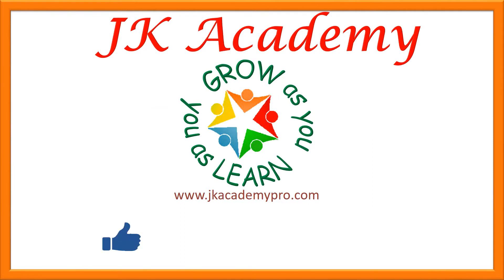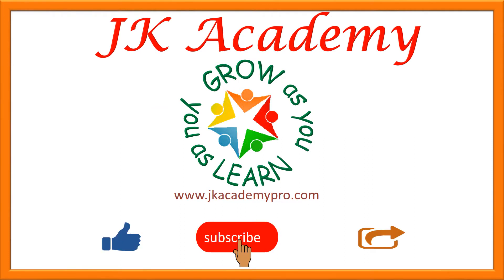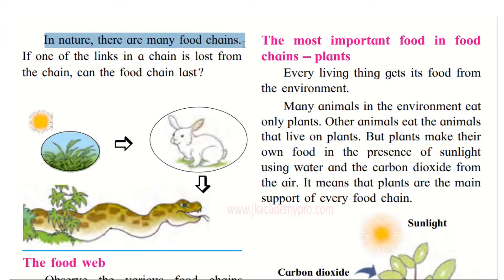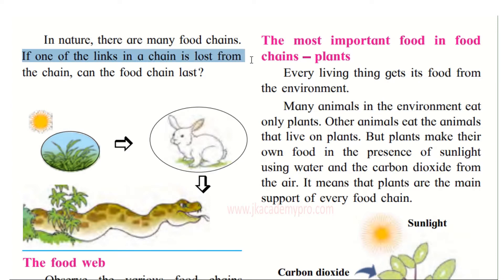Do remember to like, share and subscribe. In nature there are many food chains. And if one of the links in any chain is lost, the food chain is broken. So if any one thing is lost, the others will not be able to survive, and the food chain is lost forever.